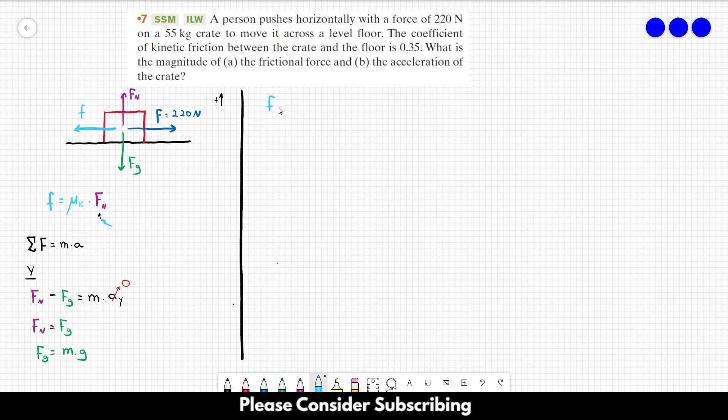So the frictional force is going to be equal to mu k times m times g. So if we just replace the letters by the numbers, we are going to have 0.35 times 55 times 9.8.